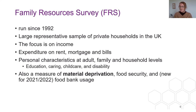Next up is the Family Resources Survey. This survey has been run continuously since 1992 and uses a large representative sample of households in the UK, although prior to 2002 the sample was Great Britain only. The focus of this data is income and the different sources of it, but information is also collected on expenditure on rent, mortgages and bills, as well as personal characteristics at adult, family and household level — including education, caring, childcare responsibilities and disability. It also has measures of material deprivation, food security, and new for 2021 and 2022, information on food bank usage.